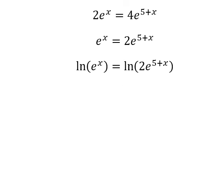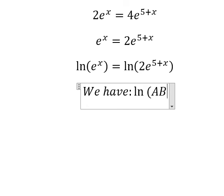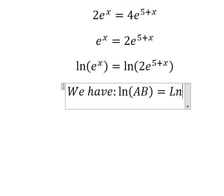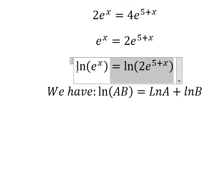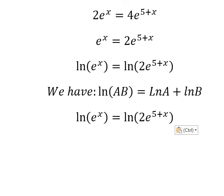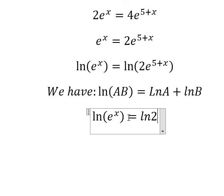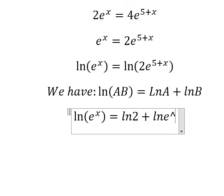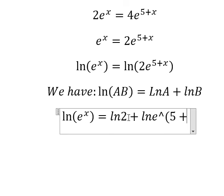Next we have the formula in here. ln(AB) equals to ln A plus ln B. So if we apply this one, we have ln 2 plus ln of e to the power of 5 plus x.